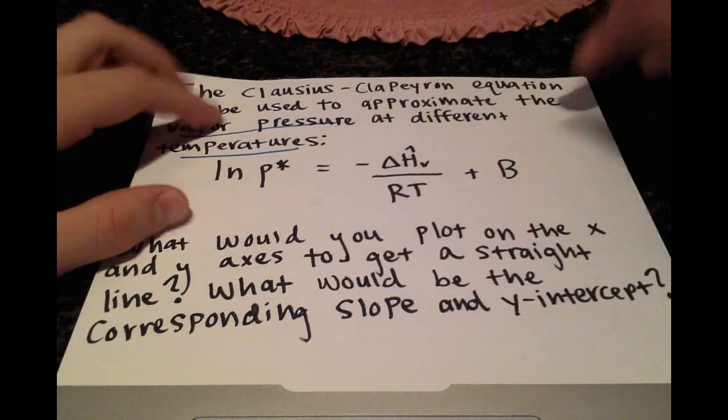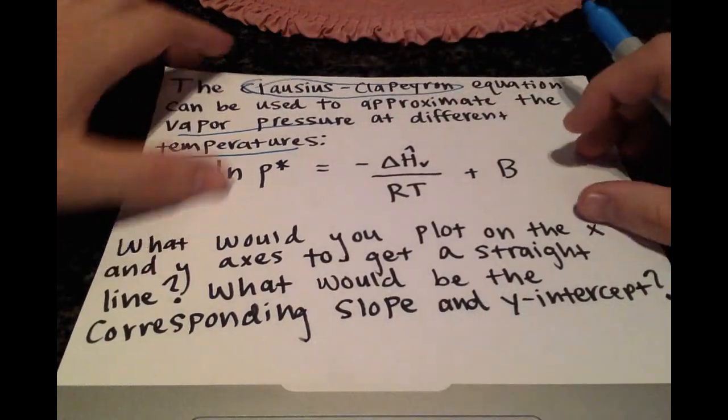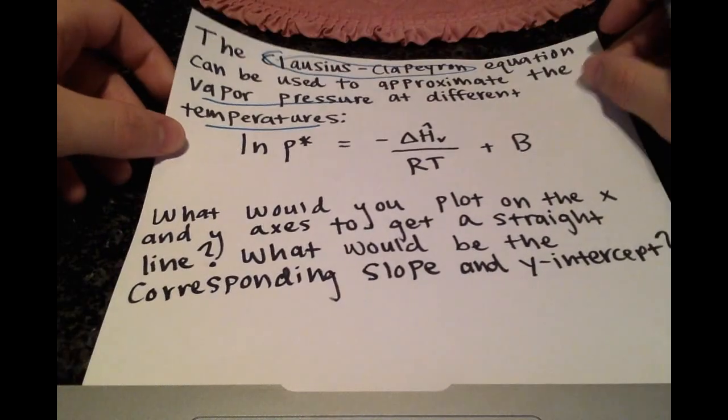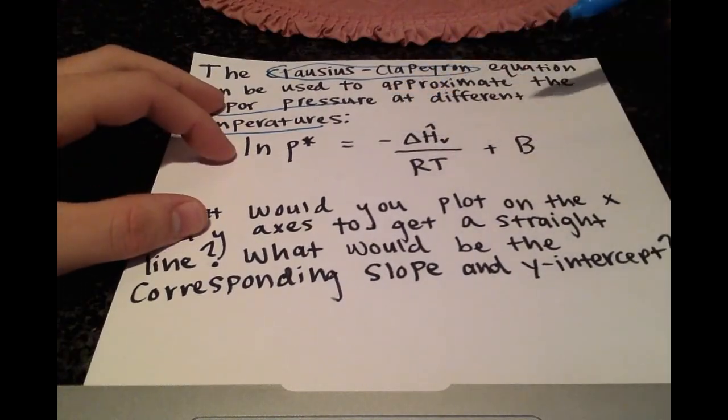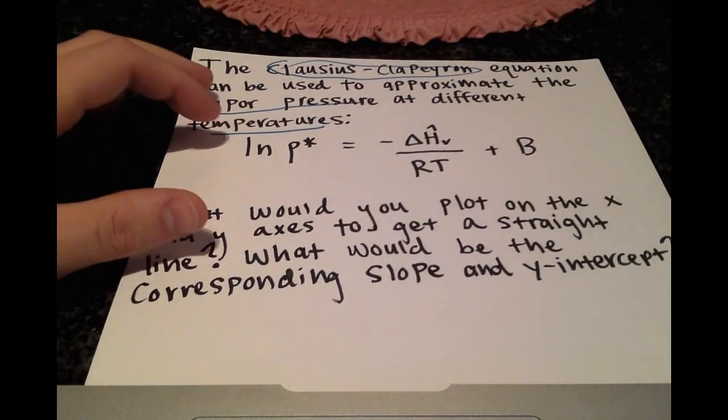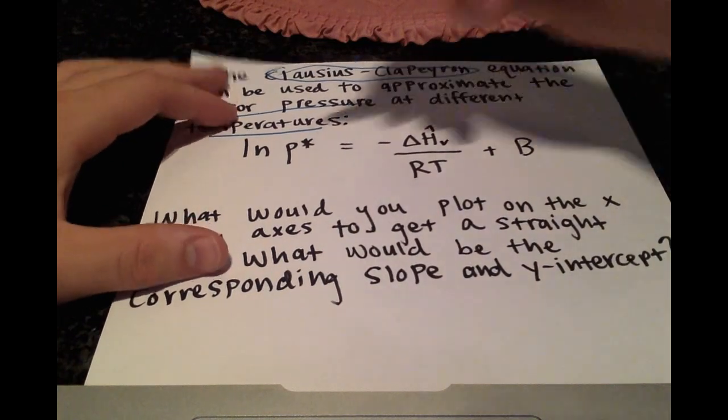So first things first, what is this Clausius-Clapeyron equation? Maybe this is the first time you're seeing this, and the first time I saw this, I didn't know what any of these variables are. So let's clarify that.